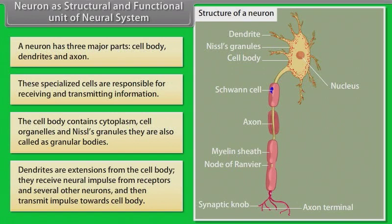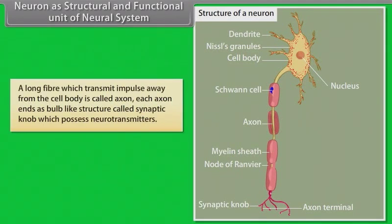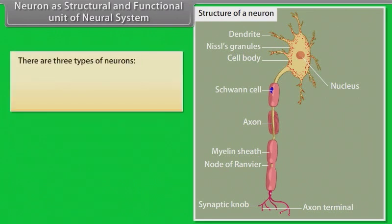Dendrites receive neural impulses from receptors and several other neurons and then transmit impulses towards the cell body. A long fiber which transmits impulses away from the cell body is called an axon. Each axon ends as a bulb-like structure called a synaptic knob, which possesses neurotransmitters.